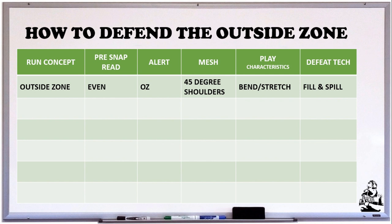Next is our mesh. At our mesh point — that is between the quarterback and the backfield, whether it be the running back or a jet sweep receiver — that back should have a 45-degree shoulder turn towards the line of scrimmage. So when he receives that ball, his shoulders will be 45 degrees to almost parallel to the line of scrimmage. That means it's a perimeter play. The play characteristic is that the ball is looking to bend or stretch to the outside, to the perimeter. Outside zone does say outside, but they're looking to cut it back because they're hoping that you overrun it and overflow the play. How we defeat that is what we call fill and spill technique.